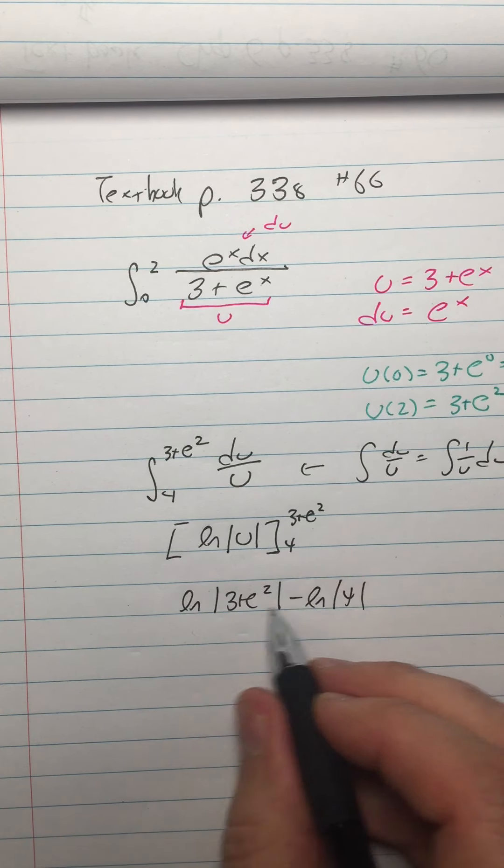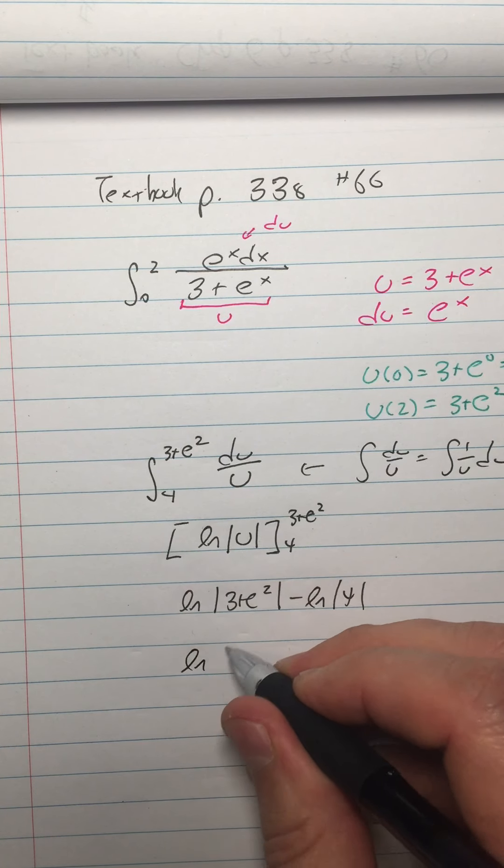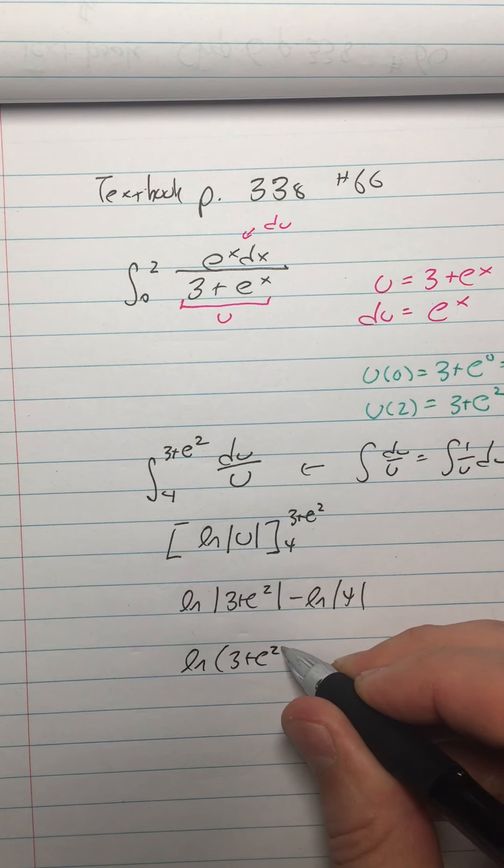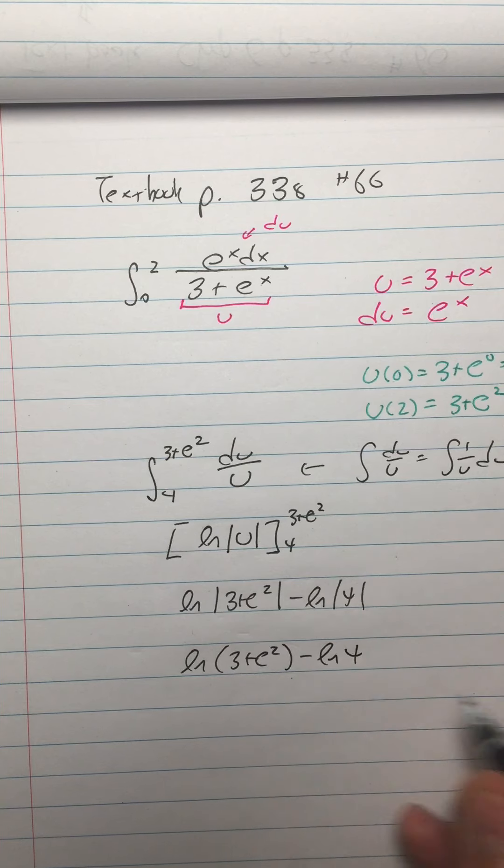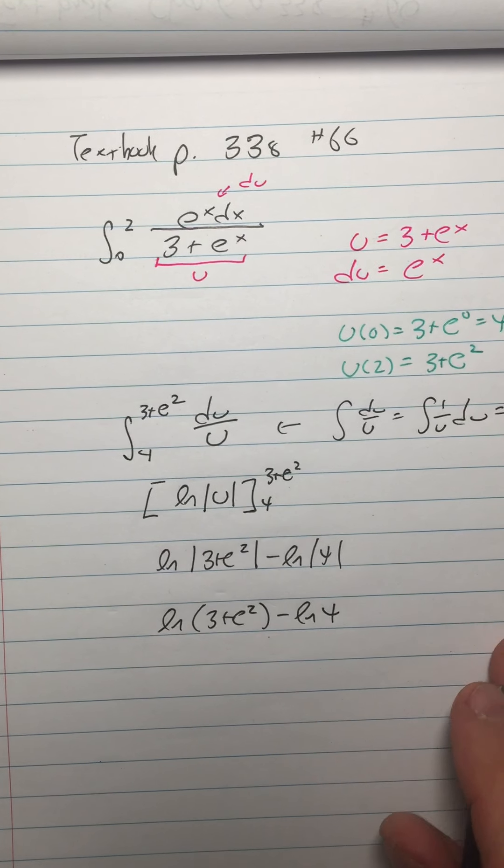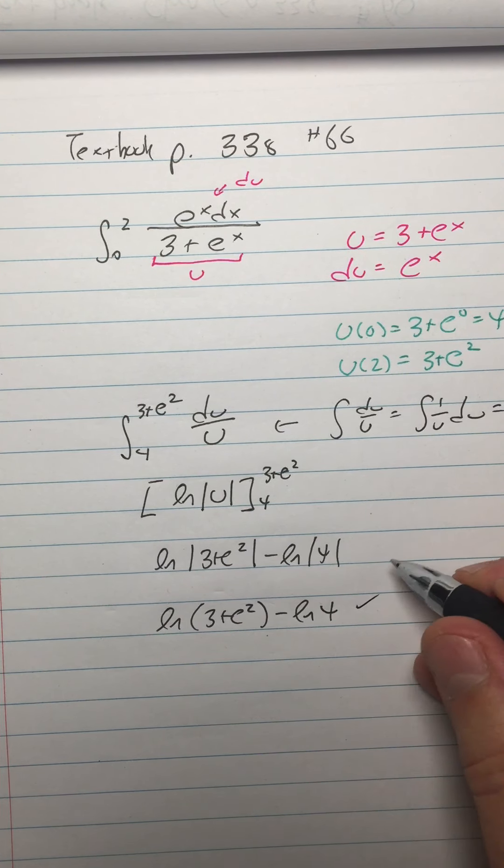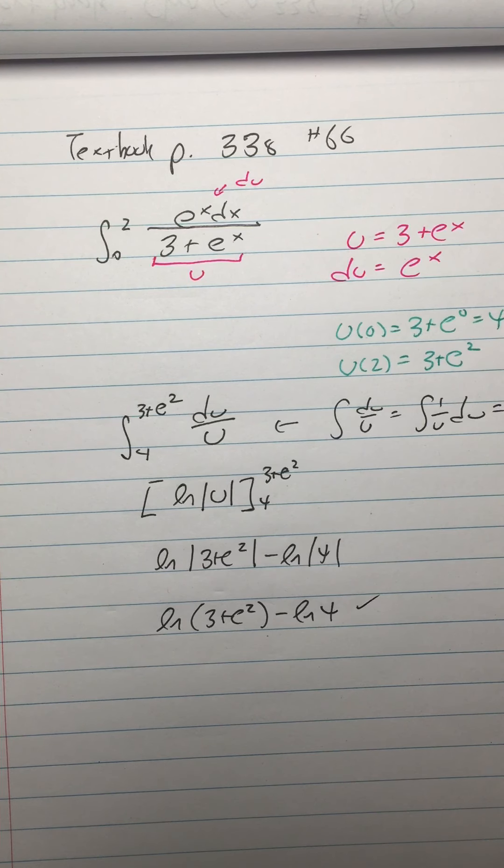Then I say both of these are positive quantities, so this is just ln of 3 plus e squared minus ln of 4. Really no way to simplify that. So you could go to decimal land at any point here, but I would just leave it like that. There you go.